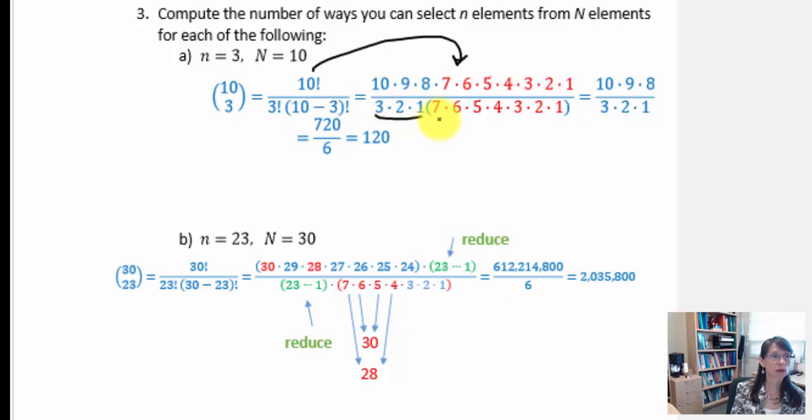So 7 factorial is right here in red. Notice in red I have highlighted those common factors. So each of those factors will reduce completely down to 1. That leaves 10 times 9 times 8 over 3 times 2 times 1.